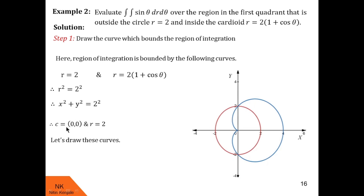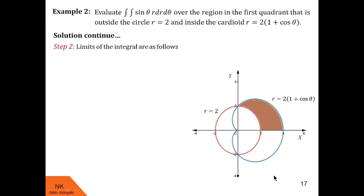The red curve is the circle centered at the origin with radius 2, and the blue curve is the cardioid r = 2(1 + cosθ). The region of integration is in the first quadrant, outside the circle and inside the cardioid. The region varies from the circle to the cardioid, so r varies from 2 to 2(1 + cosθ).